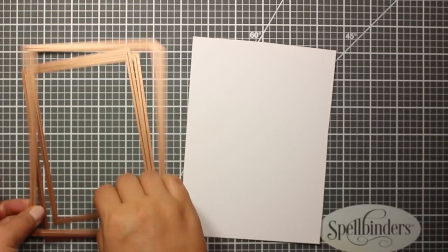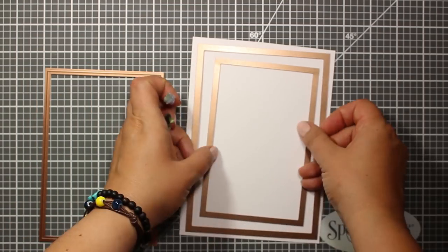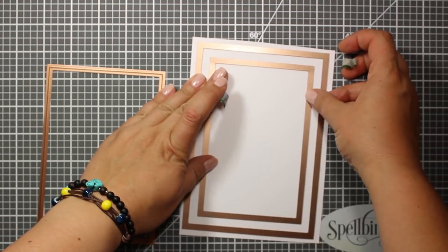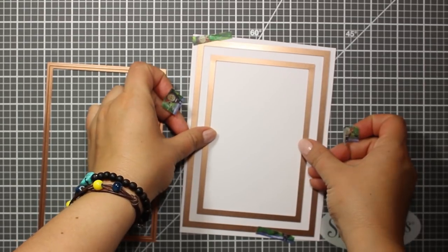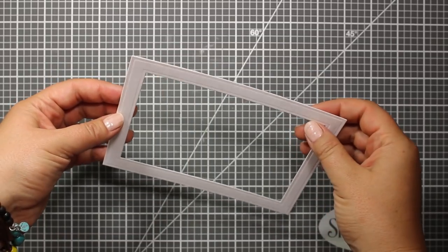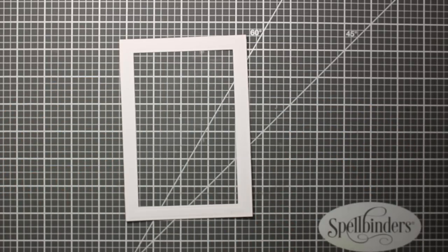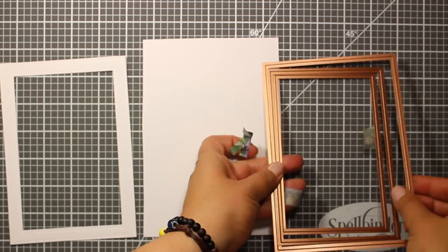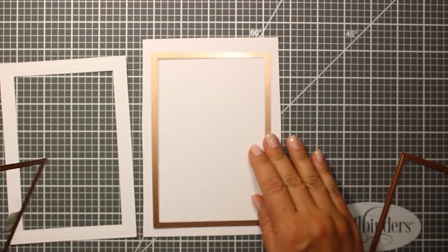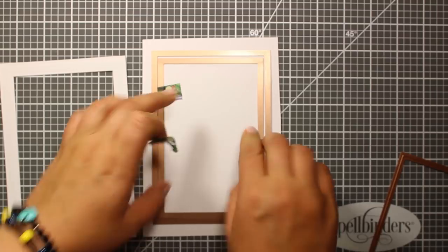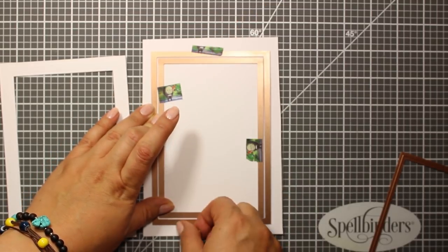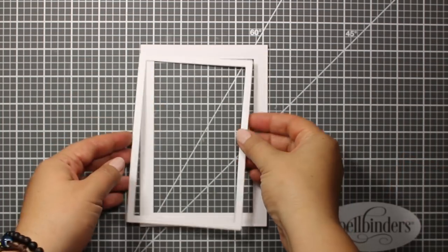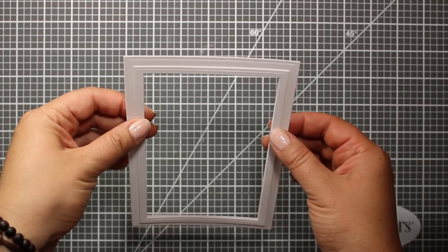So this is my background. And now I'm also going to create a dimensional frame for the card. So I'm going to use dies number 1 and number 3. And I'm using Ultra White cardstock. And this is going to create a frame that is half an inch thick. Then I'm going to use dies number 2 and number 3 to create another frame. And this one is going to be one quarter of an inch thick. So here you can see that both frames are the same size on the inside but different size on the outside.